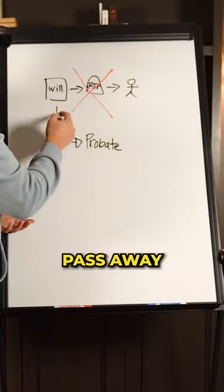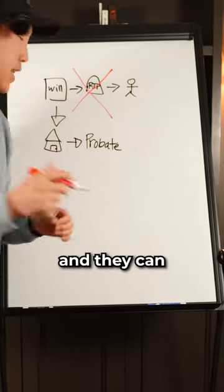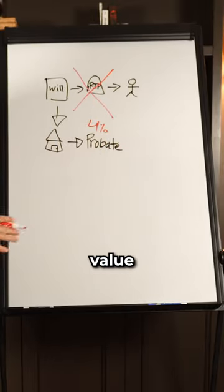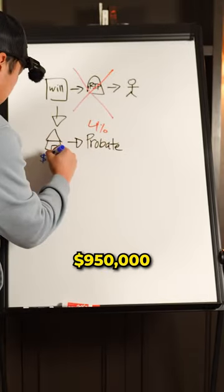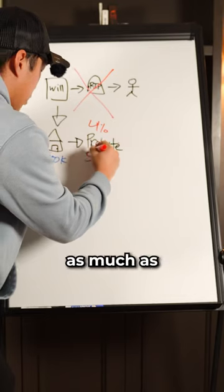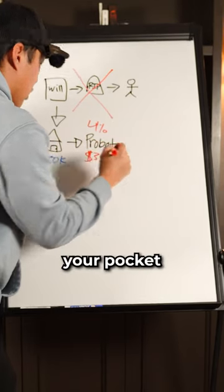Most people don't know this, but when you pass away, your house is going to go through probate, and they can take up to as much as 4% of the house's value. So let's say your house is worth $950,000. That means they can take as much as $38,000 out of your pocket. Here's what you should do instead.